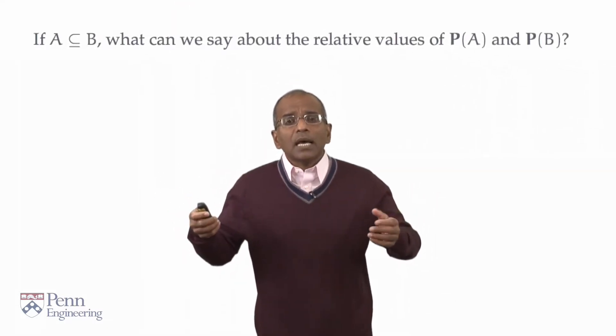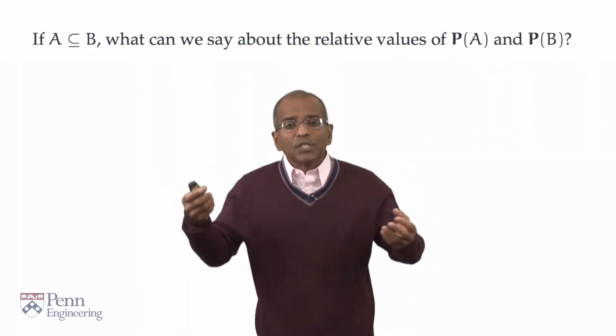Here is a basic question. Suppose you have two events, A and B. Remember, events are subsets of the sample space. Suppose, additionally, that A is a subset of B. What can we then say about the respective probabilities of A and B?